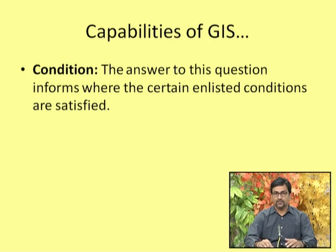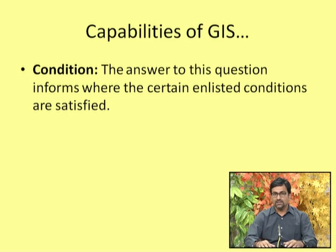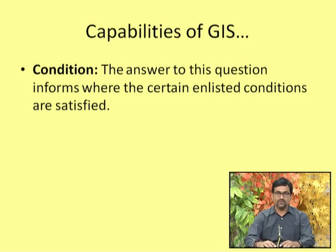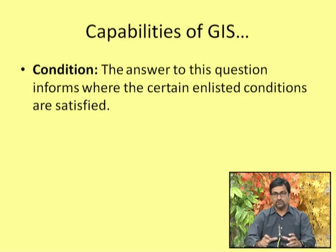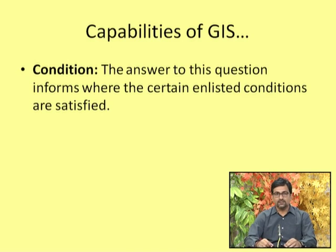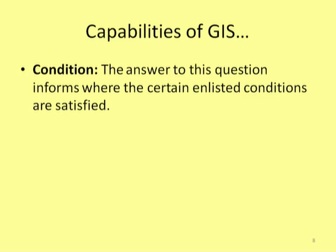The second strength is condition — the answer to a question where certain enlisted conditions are satisfied. Suppose we ask the system, after creation of a GIS application, how many hospitals are there within a five-kilometer radius from here. In case of a casualty, what would be the nearest hospital? Those conditions if satisfied, GIS provides total conditional answers. This is also a biggest strength of GIS.